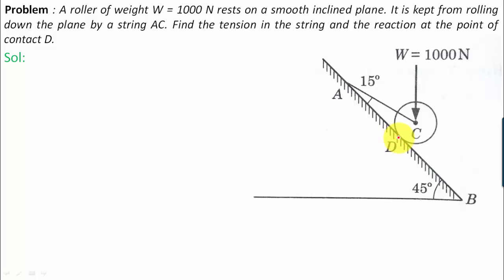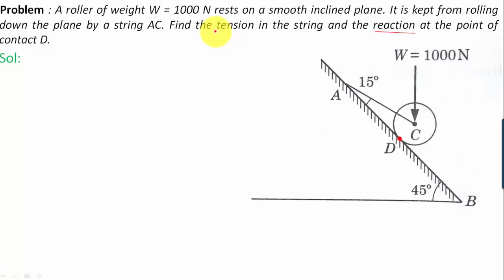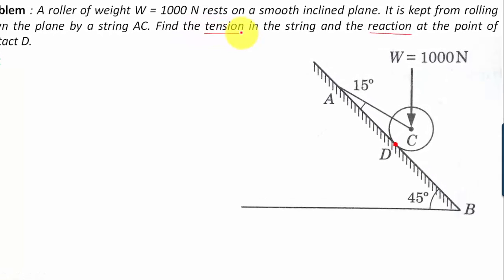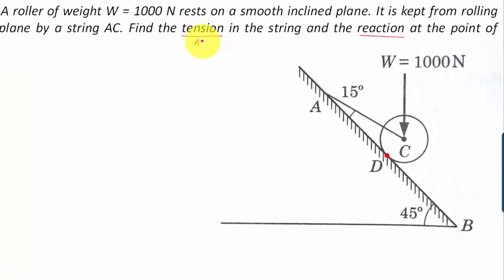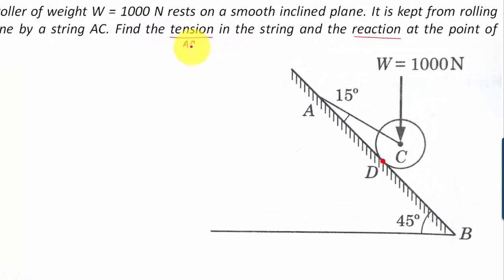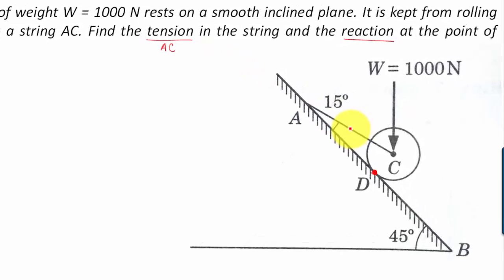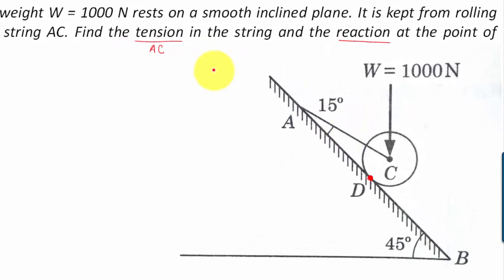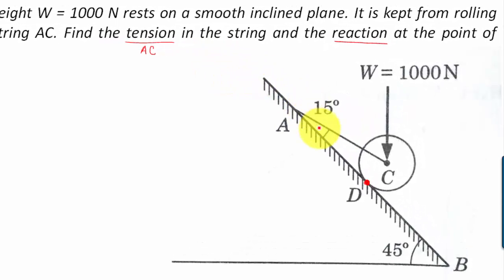The point of contact between this roller and the smooth inclined plane is point D. At point D we need to calculate the reaction, and at the same time we need to find the tension in the string AC. Let us now try to figure out all the forces that are acting.